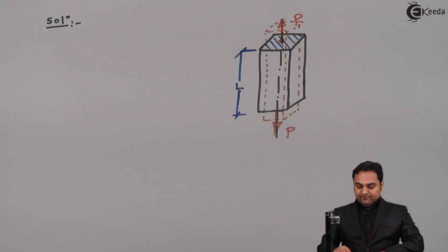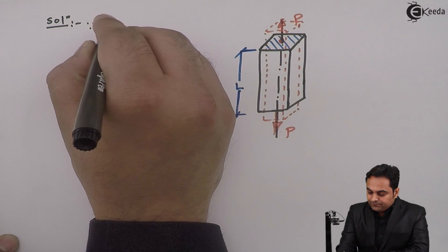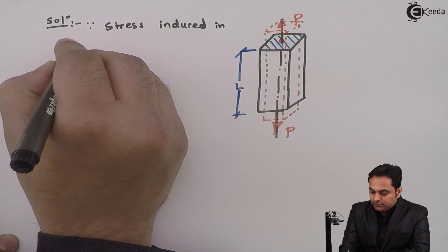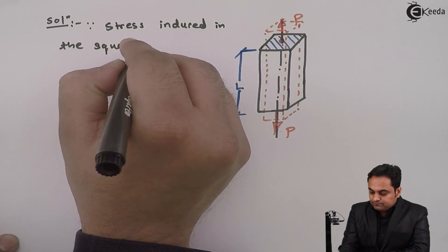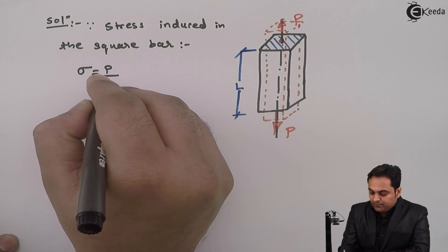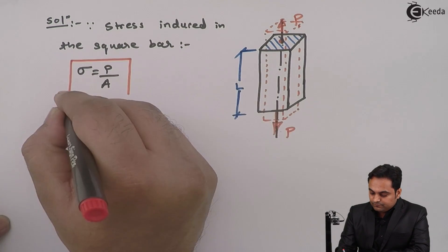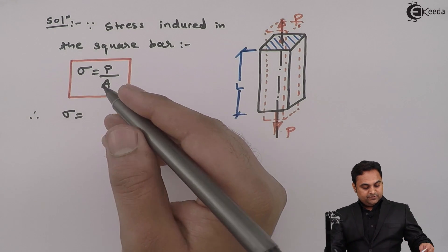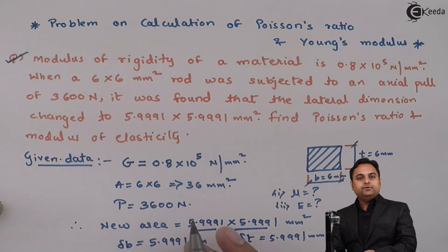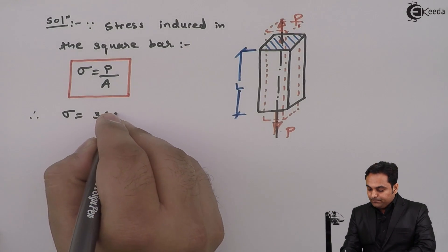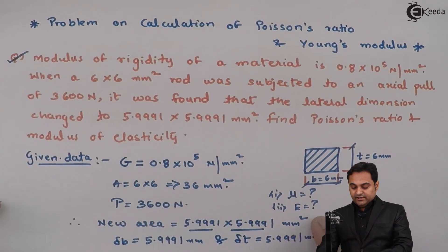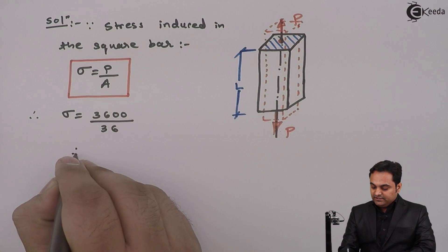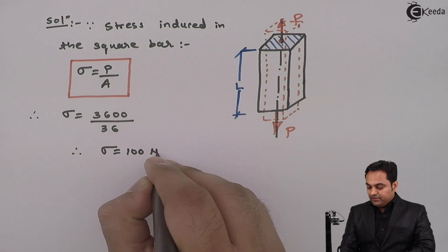Since stress induced in the square bar, sigma is equal to P upon A. Therefore, sigma is equal to P which is given as 3600 Newton, divided by the original area before deformation, which is 36 mm square. From this, I will get the value of stress as 100 Newton per mm square.